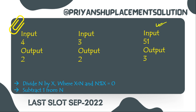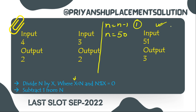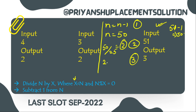The third test case — N equal to 51 — is very interesting. First step: N equal to N minus 1, so we get N equal to 50. Second step: divide 50 by 25, so we get N equal to 2. Third step: N equal to N minus 1, so we get 1. Output is 3 steps.